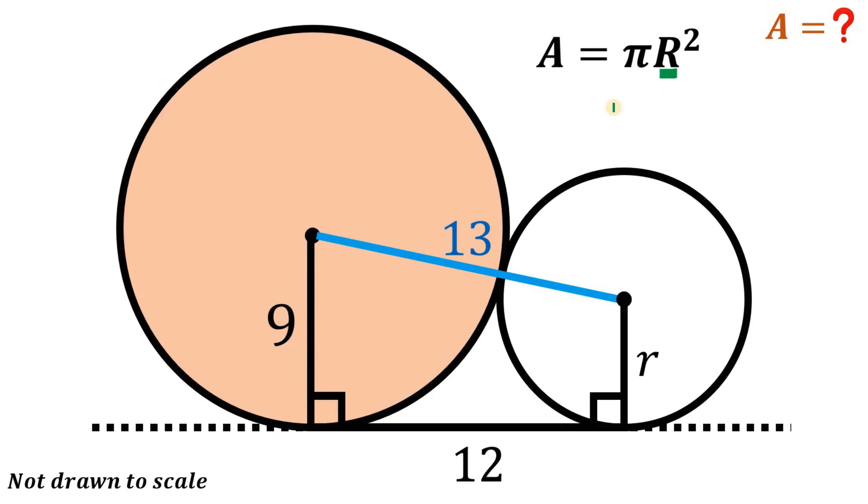Because the area of a circle is equivalent to π r squared. We know the capital R which is 9. So the area of this big circle is equivalent to 81π square units. And that is the answer to this question.